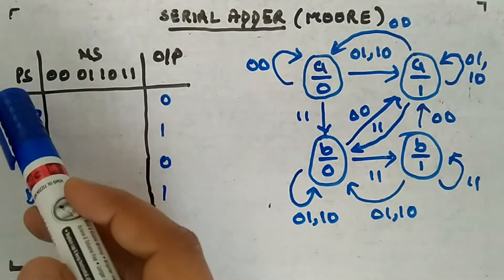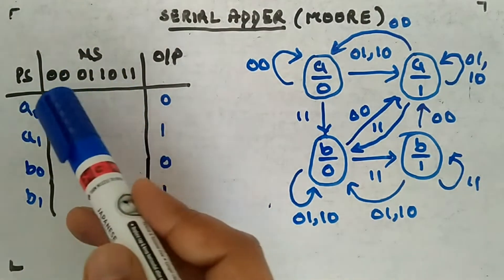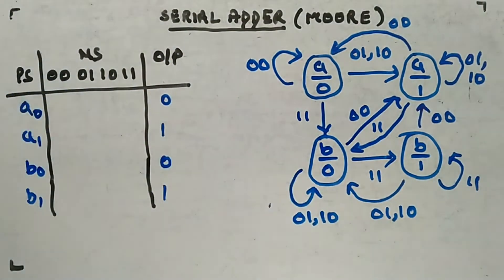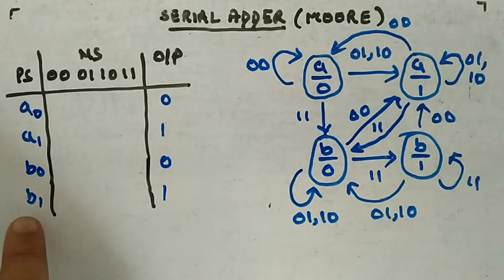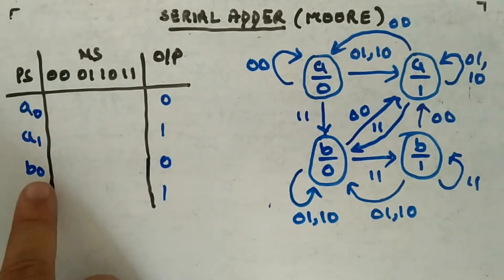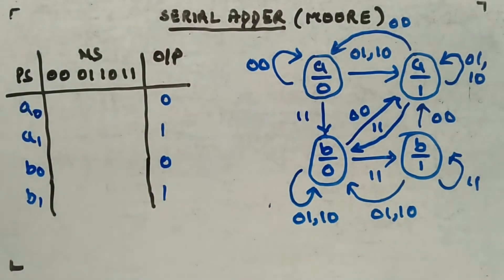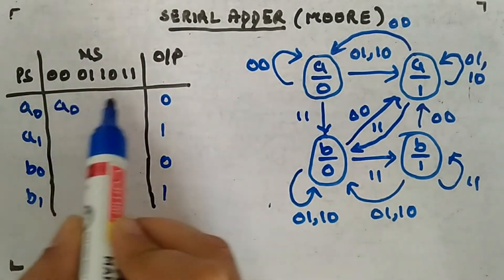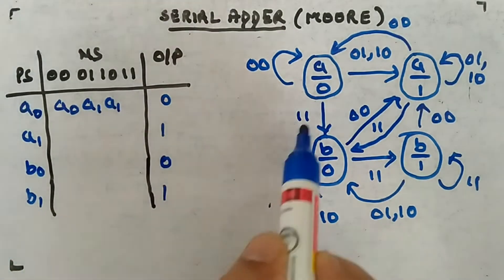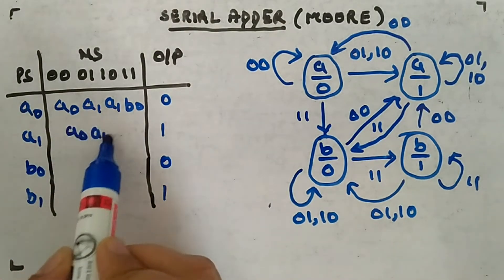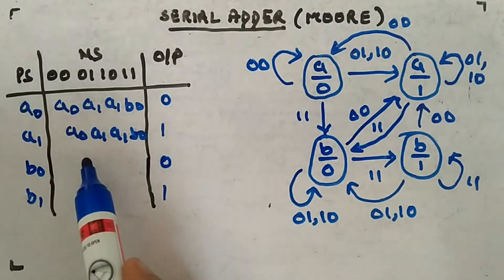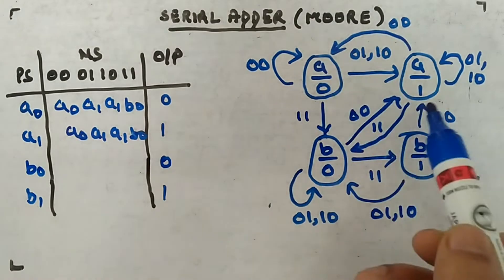Now let's make the state table. Present state is there, next state is there for all input combinations 00, 01, 10, 11, and the output is attached to the present state. A0 has output 0, A1 has output 1, B0 has output 0, B1 has output 1. For state A0: input 0,0 goes to A0; input 0,1 or 1,0 goes to A1; input 1,1 goes to B0. For A1: it goes to A0, A1, A1, B0 respectively.